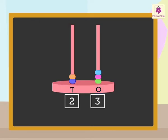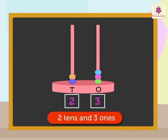So, the number is 23. That is, two tens and three ones.